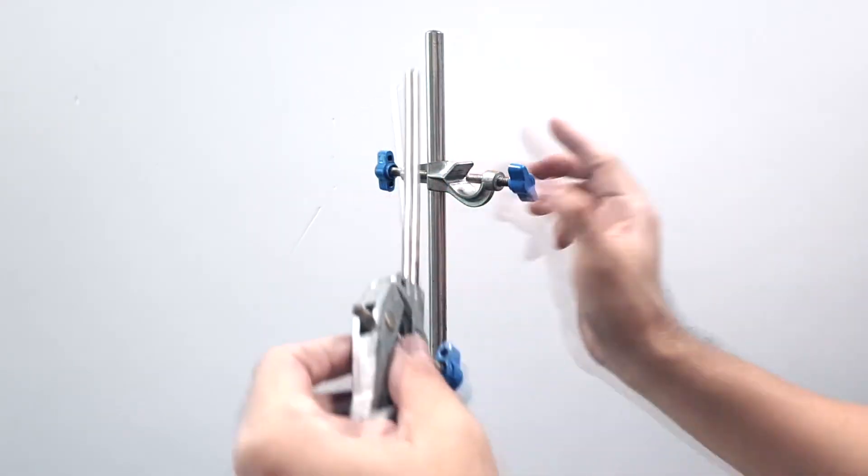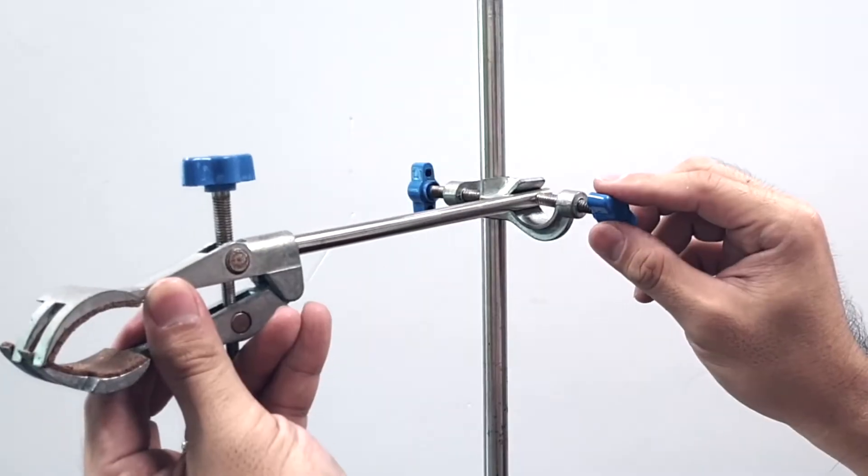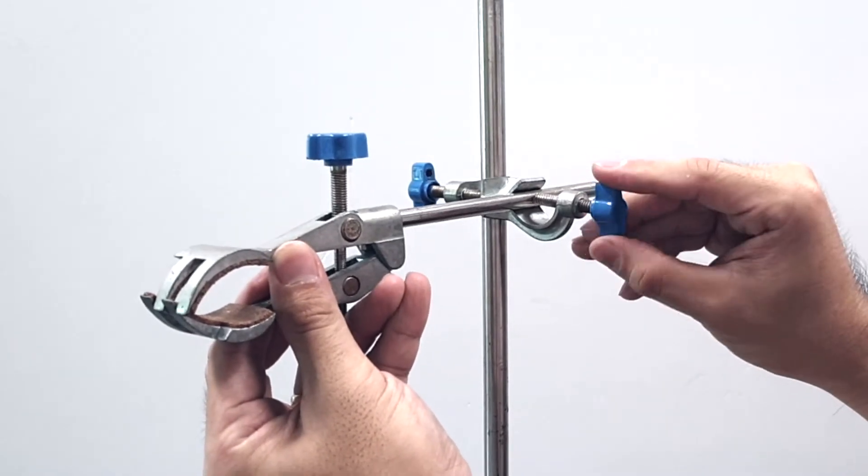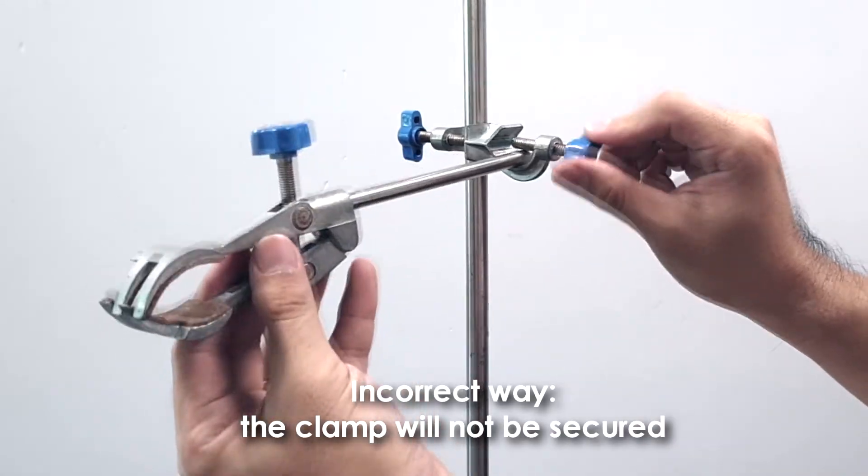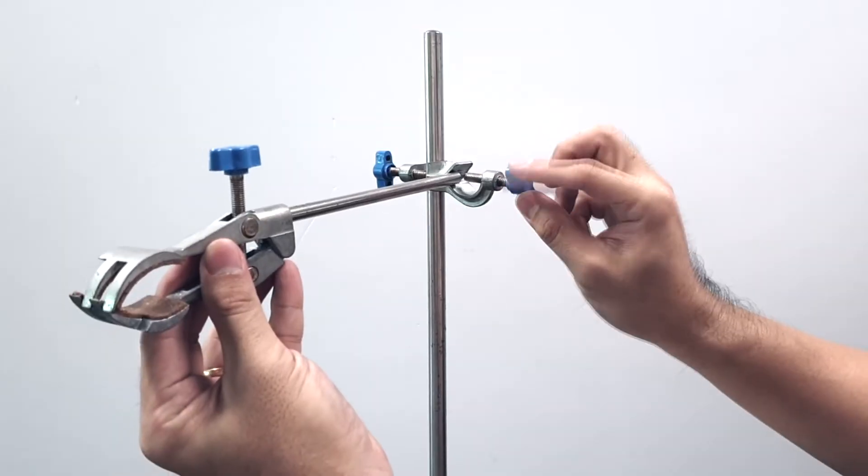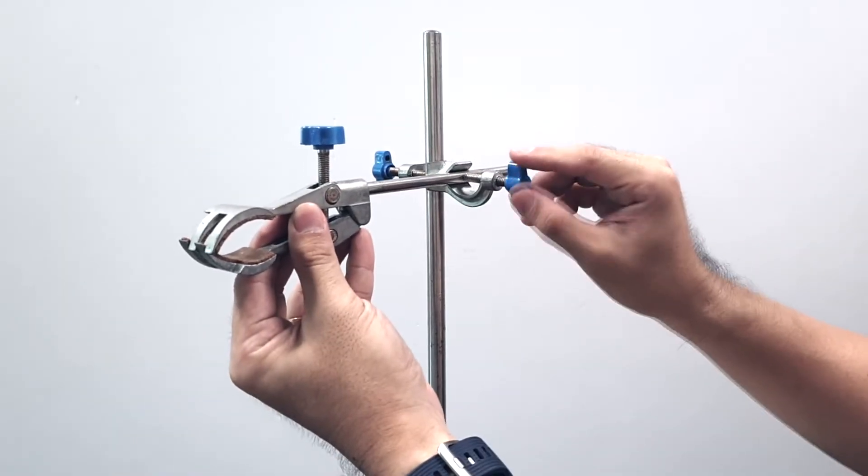Insert the shaft of the clamp into the boss as shown. Pay attention to the position. This is the correct way. Do not insert the shaft into this position here because there's no way you can tighten it. So do this properly.